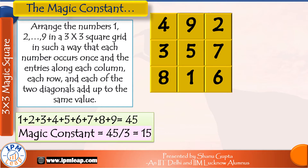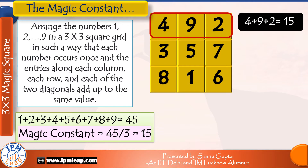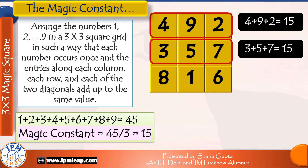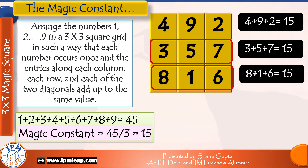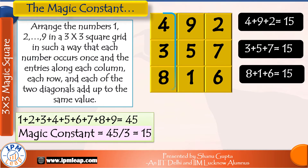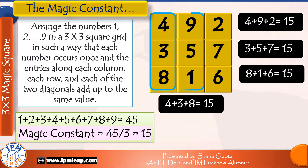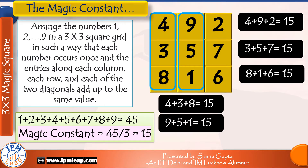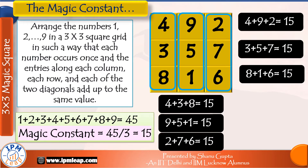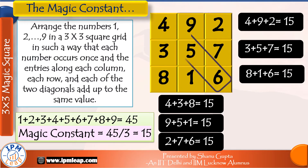So just to appreciate the beauty of a magic square, let's sum up the numbers along each row, each column, and both diagonals to see if they add up to the magic constant 15. Row 1: 4 plus 9 plus 2 is equal to 15. Row 2: 3 plus 5 plus 7 is equal to 15. Row 3: 8 plus 1 plus 6 is equal to 15. Column 1: 4 plus 3 plus 8 is equal to 15. Column 2: 9 plus 5 plus 1 is equal to 15. Column 3: 2 plus 7 plus 6 is equal to 15. Diagonal 1: 4 plus 5 plus 6 is equal to 15.